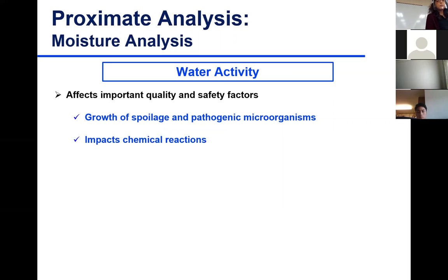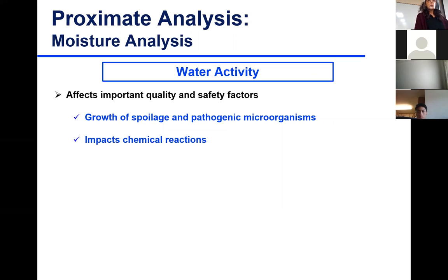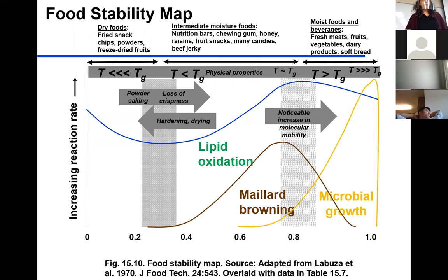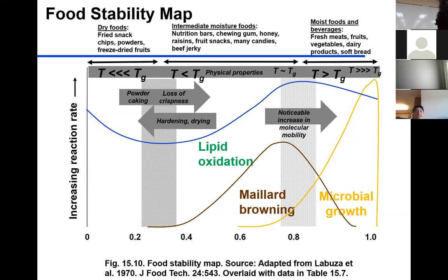As part of moisture analysis is determining water activity. We talked about moisture content so far; now I'm going to talk about water activity. This is a refresher — water activity affects important quality and safety factors. It impacts the growth of spoilage or pathogenic microorganisms, and it impacts chemical reactions, whether enzymatic or non-enzymatic. Here's a figure based on Dr. Ted LaRooza's publication — it looks complex but tells a great deal.